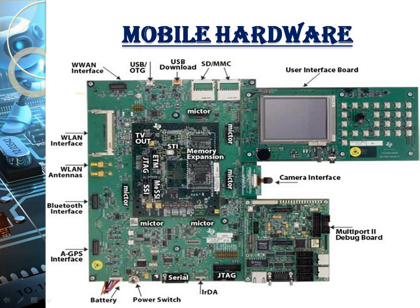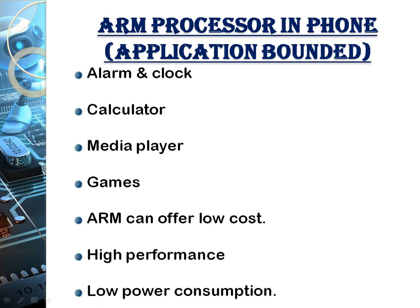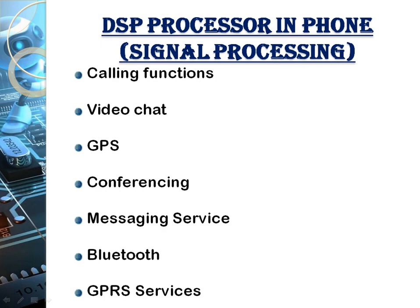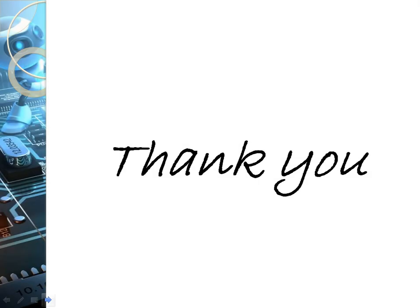In a mobile phone, the ARM processor is used to perform various tasks such as alarm clock, calculator, media player, and games — all the functions built into the phone. The DSP processor handles all calling and video functions like GPS, calling, video chat, conferencing, messaging services, Bluetooth, and GPRS.